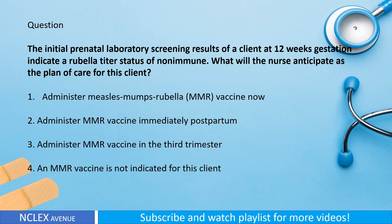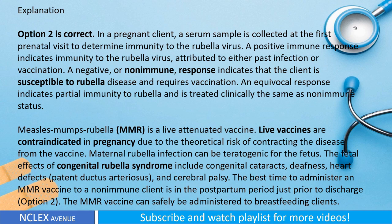Question: The initial prenatal laboratory screening results of a client at 12 weeks gestation indicate a rubella titer status of non-immune. What will the nurse anticipate as the plan of care for this client? One: administer measles-mumps-rubella (MMR) vaccine now. Two: administer MMR vaccine immediately postpartum. Three: administer MMR vaccine in the third trimester. Four: an MMR vaccine is not indicated for this client.